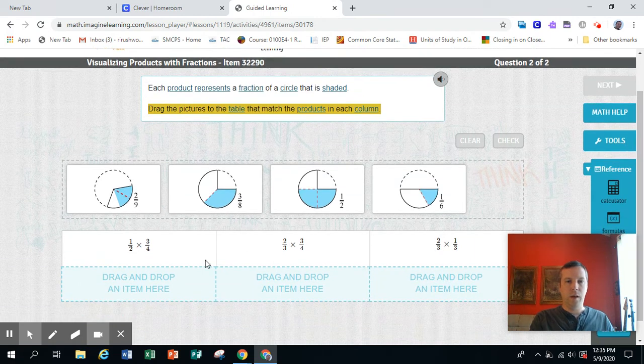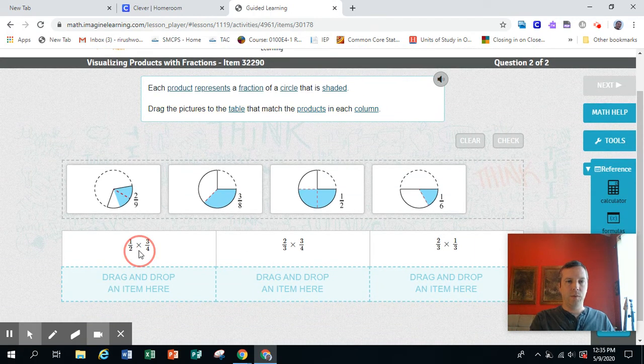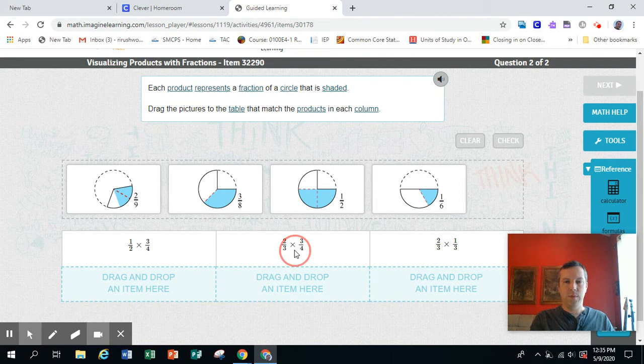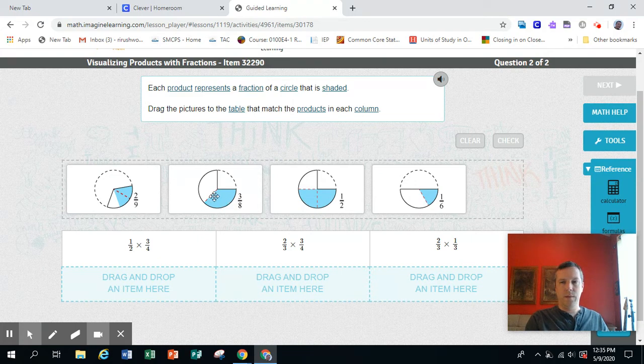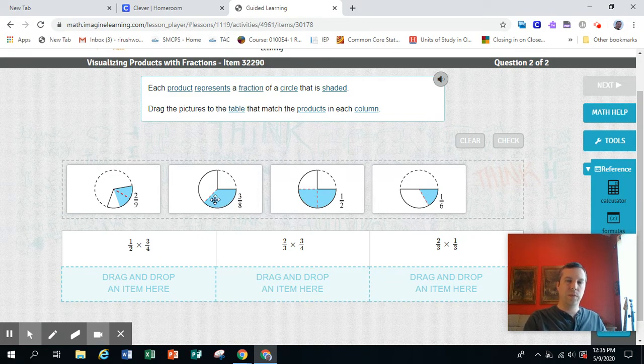Down below we have 1 half times 3 fourths, we have 2 thirds times 3 fourths, and we have 2 thirds times 1 third. So we're gonna need three of these models. It took me a little while to figure this out. I'm gonna look at this one first because I think it's a little bit easier to explain with.